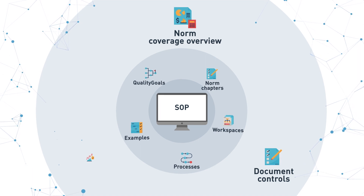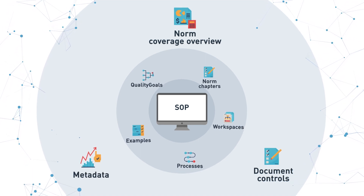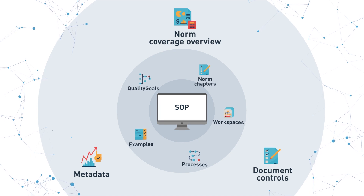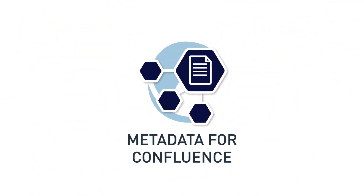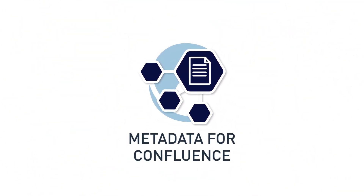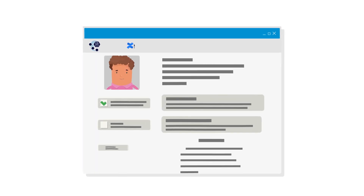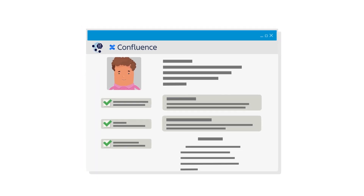Supporting features like document controls to always have the approved version on top, and tracking as simple as possible. And of course all the metadata that you need to structure your documents and mark fields as required — thanks to our app, metadata for Confluence, that comes included and ready to use in all your other spaces as well.